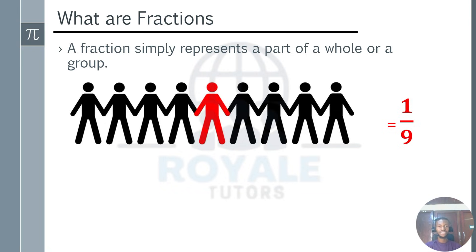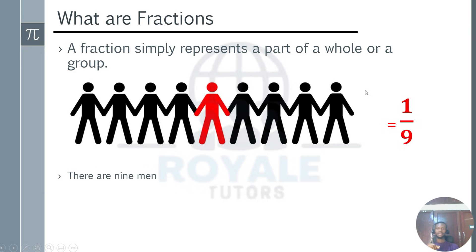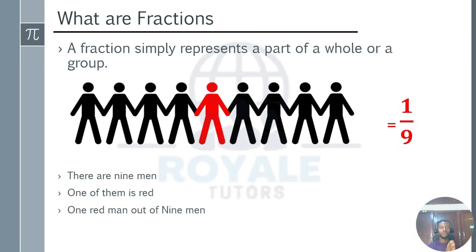A fraction simply represents a part out of a whole, or a part out of a group. That is, one colored red out of a total of nine — one out of nine. So fractions represent a part of a whole. That is one man colored red out of nine. One of them is red, so it is written as one over nine.